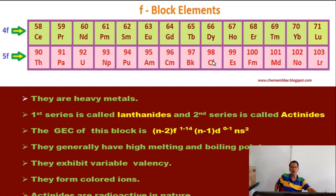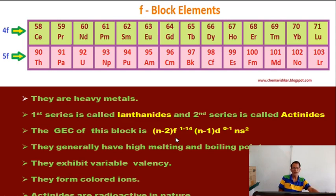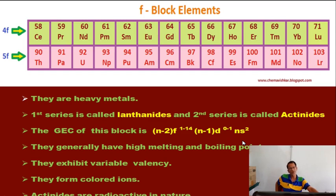The Actinides are: thorium, protactinium, uranium, neptunium, plutonium, americium, curium, berkelium, californium, einsteinium, fermium, mendelevium, nobelium, and lawrencium. These are called Actinides. Their general electronic configuration is (n-2)F¹⁻¹⁴, (n-1)D⁰⁻¹, and nS². The F sub-shell is incomplete and the D sub-shell may also be incomplete, while the S sub-shell is fully filled.